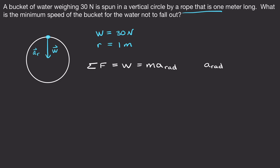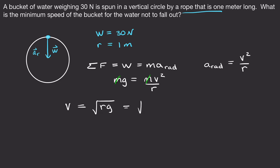Centripetal (radial) acceleration equals V squared over R. Plugging in: weight equals Mg, which equals mass times V squared over R. The mass cancels from both sides. Solving for velocity: V equals the square root of R times g. Plugging in 1 meter times 9.8 m/s² and taking the square root, we get a velocity of 3.1 meters per second for the water to not fall out.